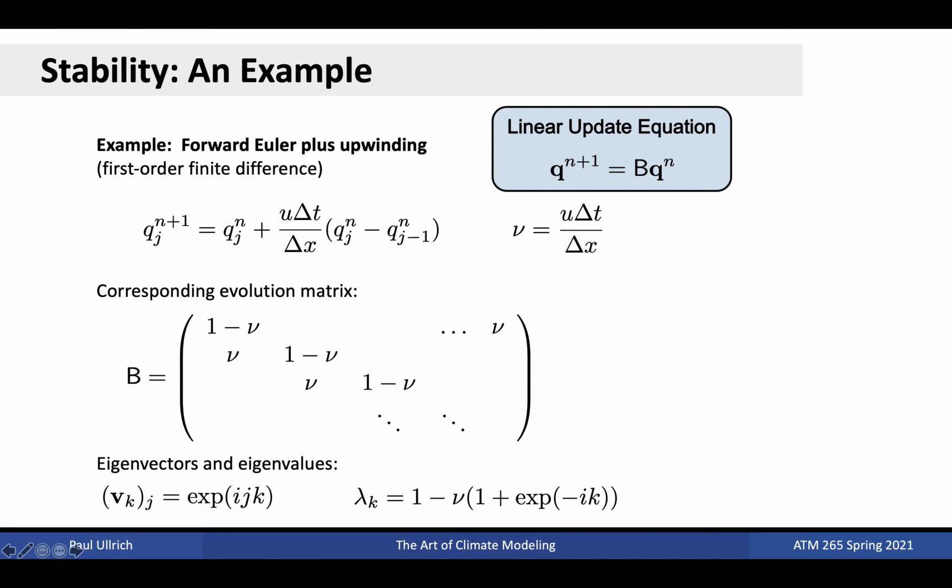The discussion so far has been very theoretical and would benefit from a specific example. So let's consider the simplest example, the forward Euler method in time plus upwinding in space from our discussion of finite difference methods. The update equation for this method looks like the first equation at the top left. Observe that the non-dimensional constant u times delta t divided by delta x appears in this equation, which we define here as nu. This constant is essentially ubiquitous in the study of numerical methods and is given the name the Courant number after researcher Richard Courant. Over a given number of degrees of freedom, the linear update equation for this particular combination of methods is given on the middle of this slide. Notice that the diagonal is exclusively 1 minus nu, while the lower off diagonal is always nu. When periodic boundary conditions are enforced, we also get a nu in the upper right corner of the matrix.